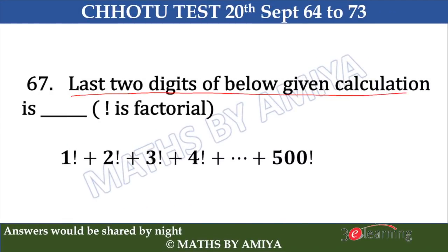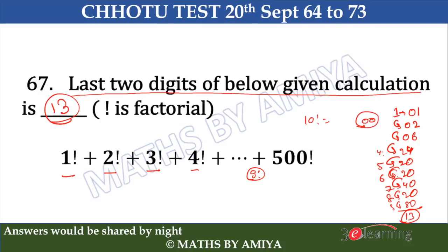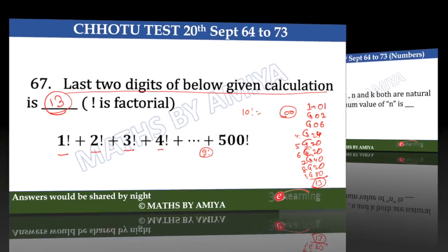Question 67: find the last 2 digits of the sum of factorials. From 10 factorial onwards, 100 factorial gives a double digit of 00, so we only need 1 factorial through 9 factorial. 1! = 01, 2! = 02, 3! = 06, 4! = 24. Multiply by 5 to get 120 — write 20. Multiply by 6: still 20. Multiply by 7: 40. Multiply by 8: 20. Multiply by 9: 80. Adding all gives last 2 digits as 13.